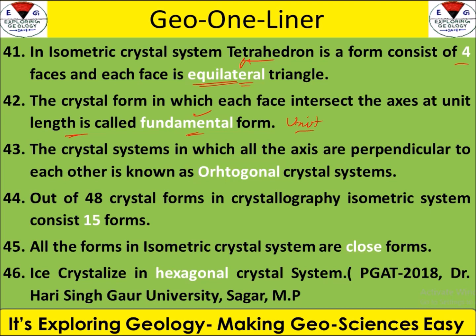A crystal system where axes are perpendicular to each other is called an orthogonal crystal system. An important question: before we discuss the 48 forms seen in crystallography, the isometric crystal system has 15 forms. All isometric forms are closed forms — this is very important. Among closed forms and open forms, the isometric forms are all closed forms, giving a total of 15 for the isometric system and 18 total closed forms.